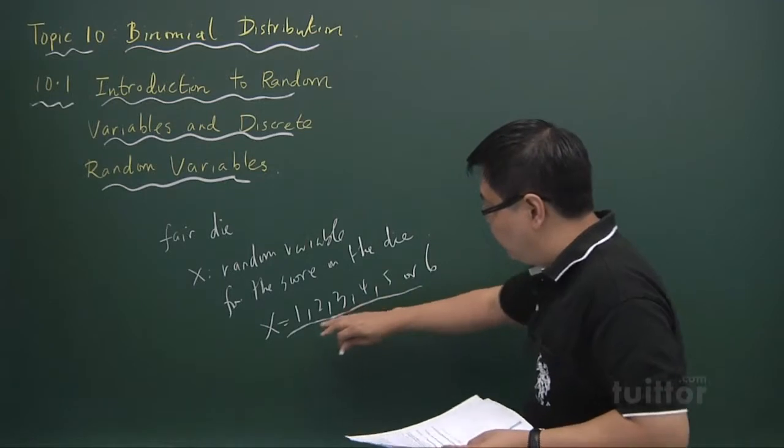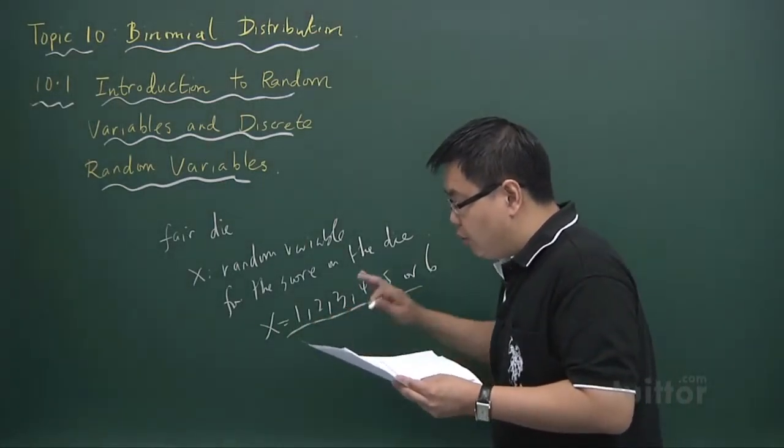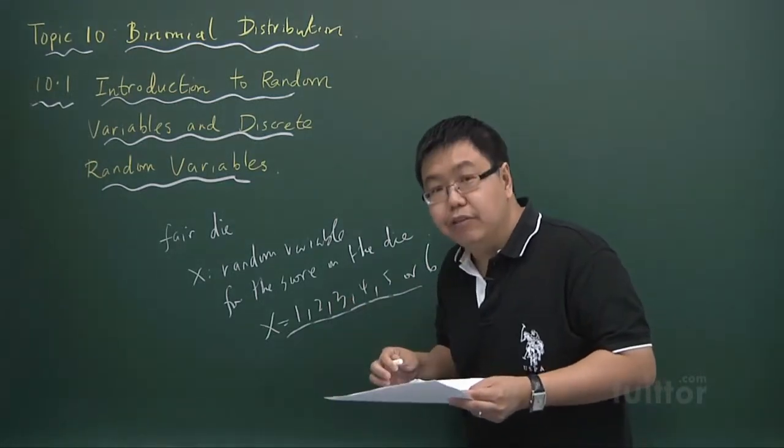So however, if the values of x are discrete values like this, we call such a random variable a discrete random variable.